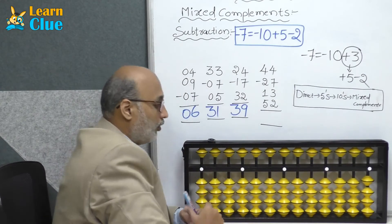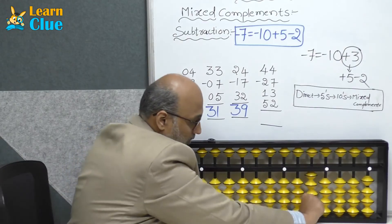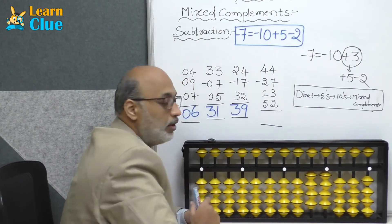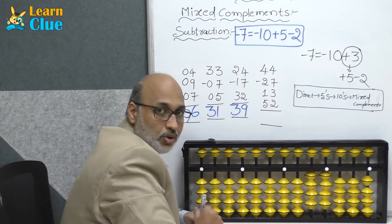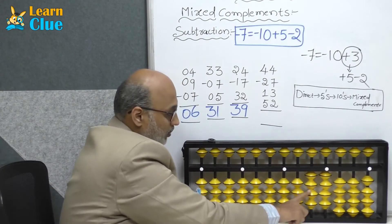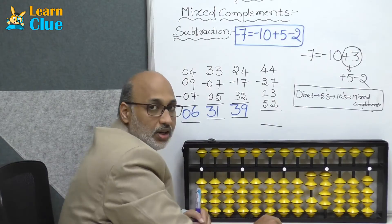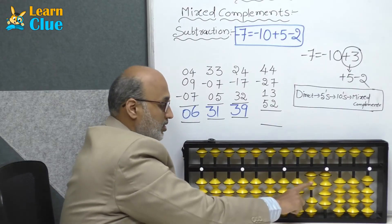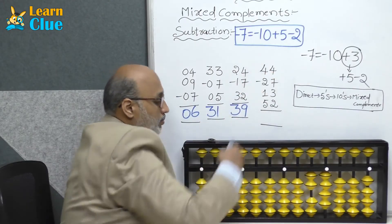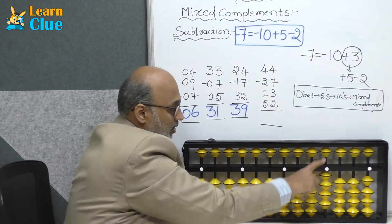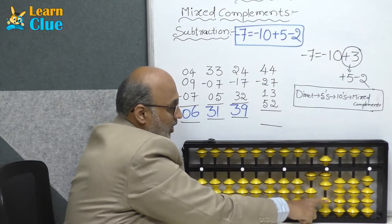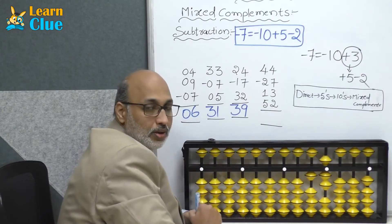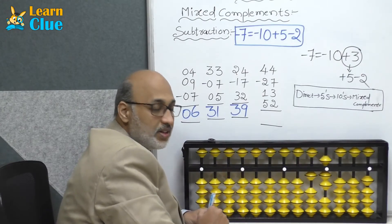Next problem: 44 — that's plus 40 plus 4. Minus 27: minus 20 minus 7. Minus 7 is nothing but minus 10 plus 5 minus 2. Now they are asking...